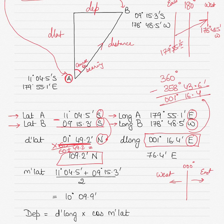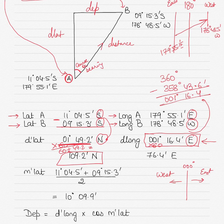Coming back to D long: I've got 001°16.4'. To convert to minutes, I multiply the degree by 60: 1 × 60 = 60, then add the remaining minutes: 60 + 16.4 = 76.4 minutes East.